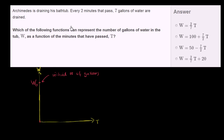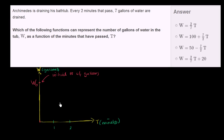They tell us that every two minutes that pass, time is given in minutes and W is in gallons. So every two minutes that pass, seven gallons of water are drained. Let's say two minutes pass from time equals zero — that is one minute, and this is two minutes right over here.